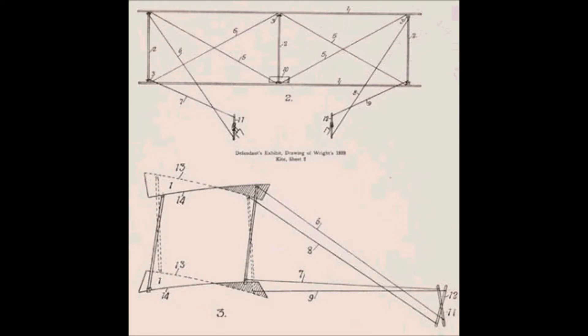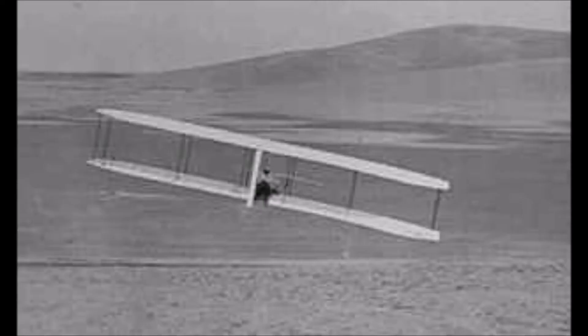Having developed a sense of how lift was generated efficiently, the next step was control — there's no point in putting an engine on it if the plane can't be controlled. The brothers got the idea of twisting the wings, a cantilever effect, which causes one wing to drop, creating a bank that forces the airplane around a corner and allows turns to be controlled. In 1902, with Wilbur at the controls, they launched off the big hill at Kill Devil Hills and made a controlled turn — something that had not been done before.